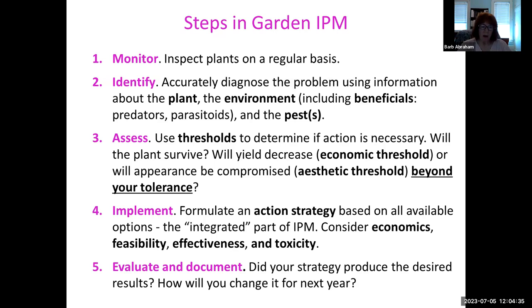People who can't tolerate one bug are going to have really bad effects on the environment from spraying pesticides. After you know all of the above, you figure out what you're going to do. The integrated part of integrated pest management means you're using different kinds of tactics. Things to consider in your own garden: economics, feasibility, effectiveness, and toxicity in terms of both the pest and non-target organisms. Step five is the continuing part — you have to look at your garden after applying your strategies and see what the outcome was.